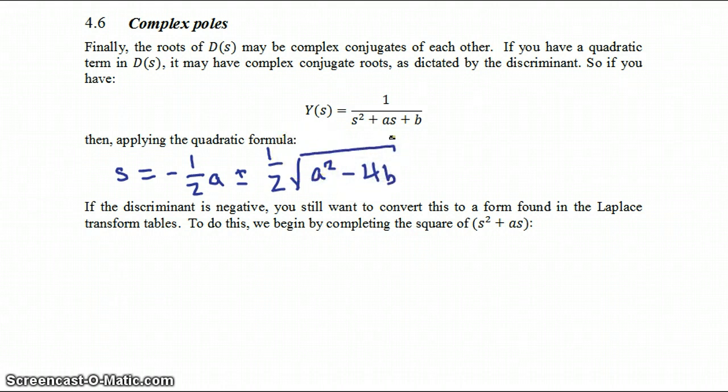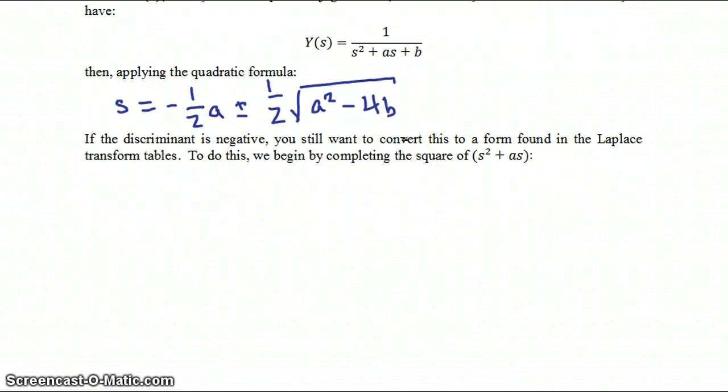Now in the case in which the discriminant is negative, we're still going to have to convert this to a form found in the Laplace transform tables, even though the quadratic form can't be factored out. So to do this, we begin by completing the square of S squared plus A S.